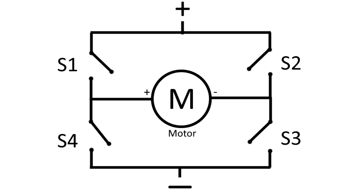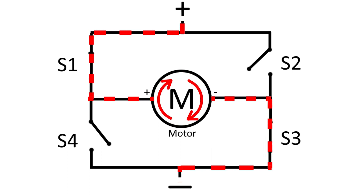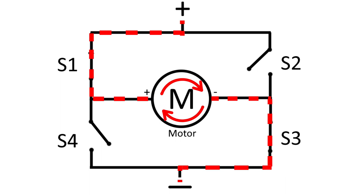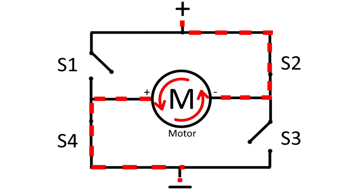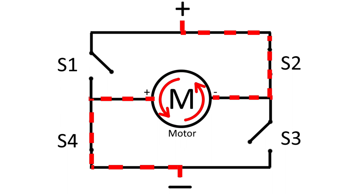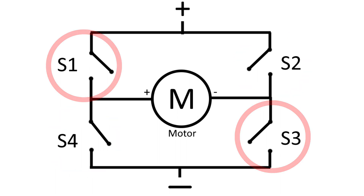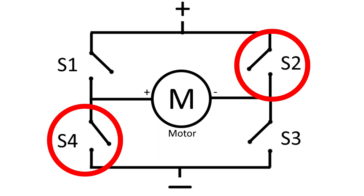If the positive terminal of the power supply goes through the positive terminal of the motor, the motor spins clockwise. If we close switch S1, nothing happens yet because the circuit is still open. But if we close S3 as well, current flows out of the positive of the battery, through the positive of the motor, out the negative of the motor, and then to the negative of the battery — making the motor spin clockwise. If instead we press the other two switches, current flows from the battery's positive into the negative of the motor, causing the motor to spin anti-clockwise.